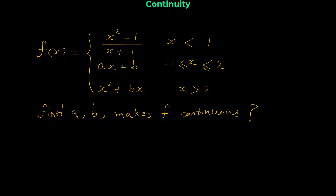Similar to before, we use the definition of continuity: the function must be defined at the point, the right and left limits must exist and be equal, and the limit must equal the function value. Let's start with point x = -1. We first find f(-1).